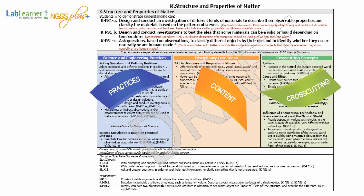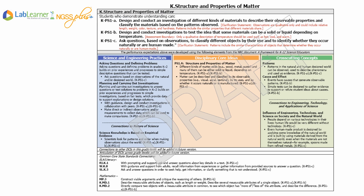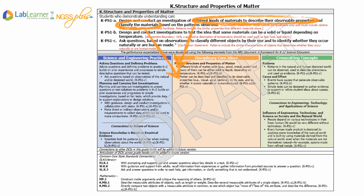The standards have created a way to assess whether students understand science because they practice science and integrate experiments with the concept. The circled area shows performance expectations — what students should be able to do in order to understand the standard, in this case properties of matter. The performance expectations are composed of the practices, disciplinary core ideas, and cross-cutting concepts. The standards always start with the experiment — here you can see 'design and conduct an investigation' — tightly linked to the disciplinary core idea that different kinds of materials have observable properties students must describe and classify.